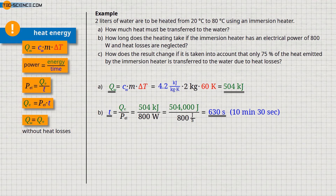The efficiency with which the water is actually heated is taken into account by introducing a factor eta (η). This factor indicates what percentage of the emitted heat from the immersion heater is actually used to heat the water. So if we multiply the emitted heat of the immersion heater with this efficiency eta, we get the heat actually absorbed by the water.